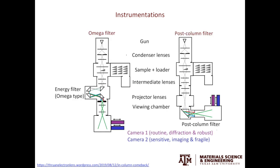There are two types of hardware to do EELS. The first is the one you have seen before, which is called the post-column filter. Another type is the in-column filter. Because the shape of the beam follows the omega path, it is also called the omega filter.